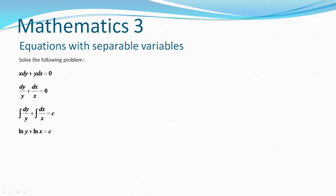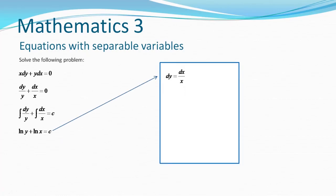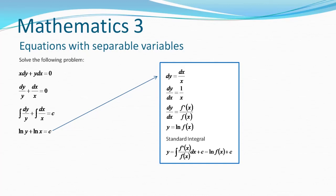Taking the integral of each term leaves us with ln y plus ln x. To show how we got here: the form dx over x needs to be rewritten to standard form so we can see dy over dx and the derivative of a function of x over the function of x. We recognize that the derivative of a function of x over the function of x is a standard derivative. From standard integrals, the derivative of a function of x over the function of x integrates to ln of that function. Therefore we can integrate dy over y to ln y, and the same for x.